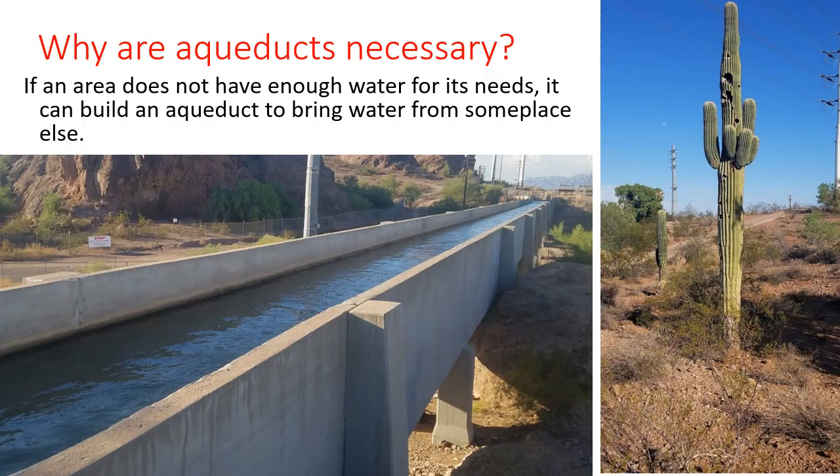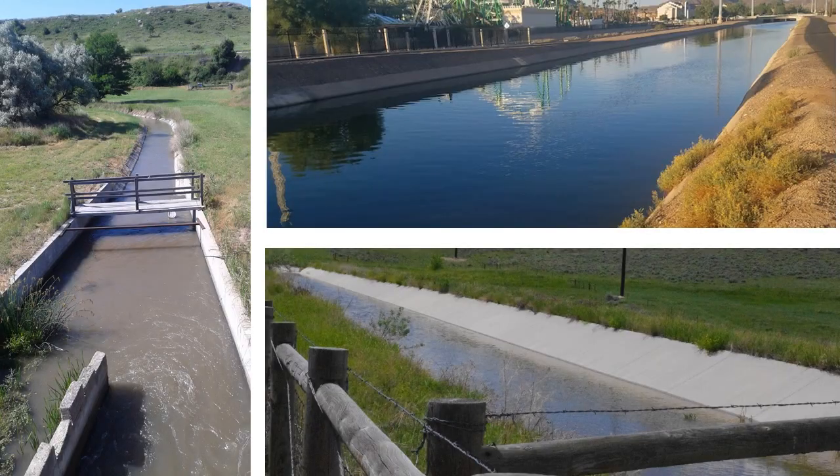So why are aqueducts necessary? If an area doesn't have enough water for their needs, an aqueduct will bring water to you. It brings water from somewhere where they have water to someplace where they don't. Aqueducts are typically concrete-lined, although they can just be natural channels. These are man-made watercourses — you pour down some concrete, make an artificial channel, and run the water through it to wherever you want it to go.